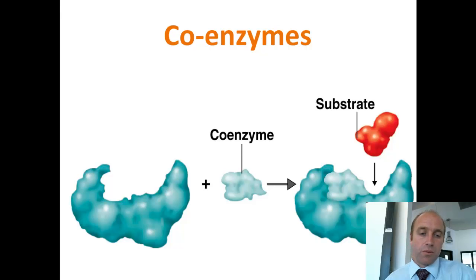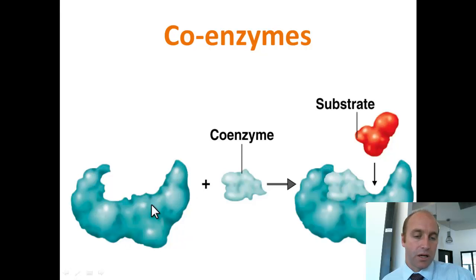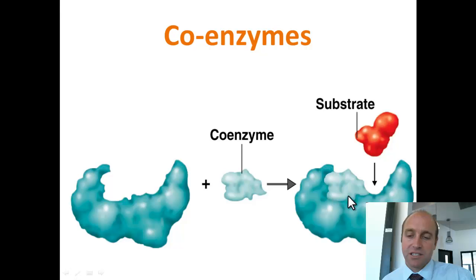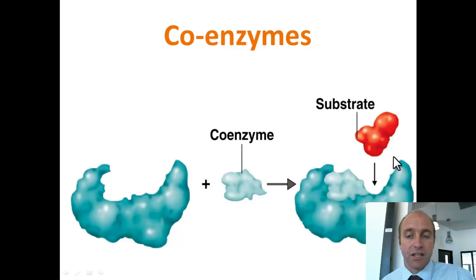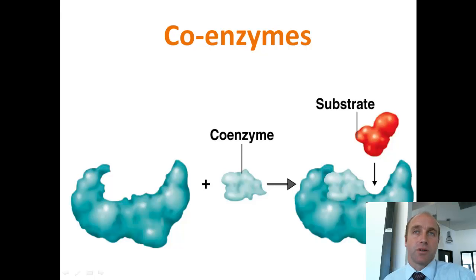A way a coenzyme might work is shown in this diagram: the darker blue object is the enzyme and the lighter blue one is the coenzyme. The coenzyme sits into a section of the enzyme and contributes to the active site, helping make that specific shape. Without the coenzyme present, the substrate won't fit in and the enzyme won't be active — so it assists the enzyme to become active. Cofactors work in a similar way, just allowing the enzyme to become active.